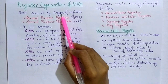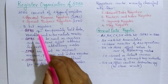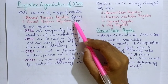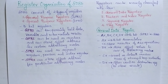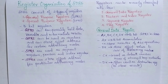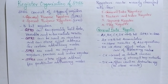8086 consists of two types of registers. The first one is general purpose registers, which we can call GPRs, and the second is special purpose registers, which we can call SPRs. These two registers are 16-bit registers, where general purpose registers can work as both 8-bit and 16-bit registers. GPRs can temporarily hold data, variables, and intermediate results.